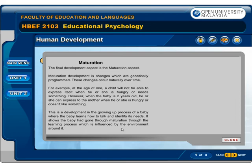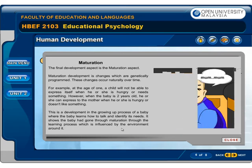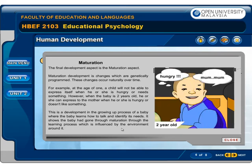The final development aspect is the maturation aspect. Maturation development is changes which are genetically programmed. These changes occur naturally over time. For example, at the age of 1, a child will not be able to express itself when he or she is hungry or needs something. However, when the baby is 2 years old, he or she can express to the mother when hungry or doesn't like something. This is a development in the growing up process of a baby, where the baby learns how to talk and identify its needs. It shows the baby had gone through maturation through the learning process which is influenced by the environment around it.